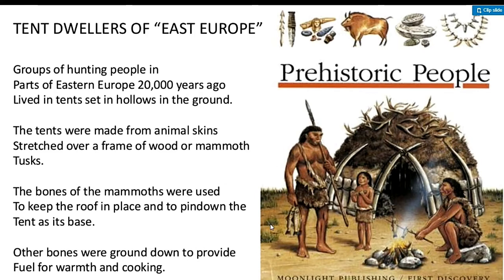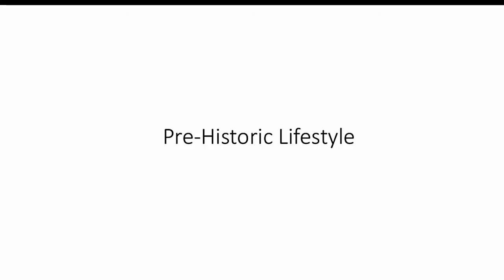Now let's look at ancient dwellings — the tent dwellers of East Europe. They were a group of hunting people in parts of Eastern Europe, approximately 20,000 years ago. They lived in tents set in hollows in the ground. The tents were made from animal skins stretched over frames of wood and mammoth tusk.